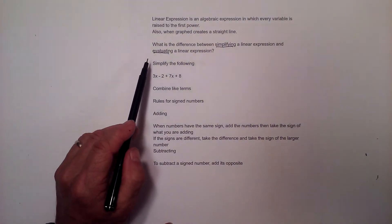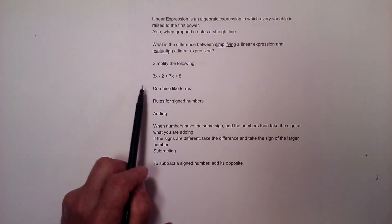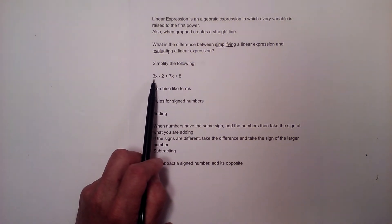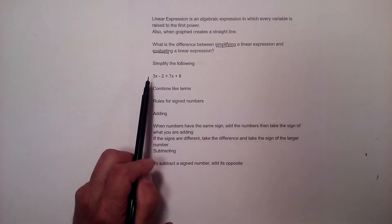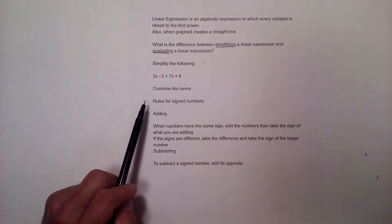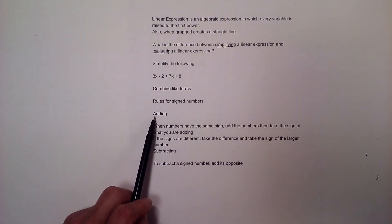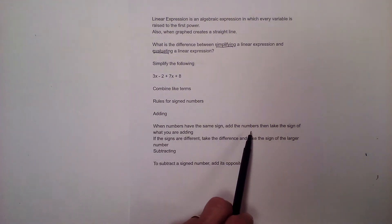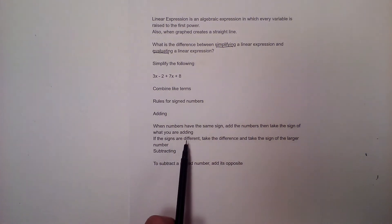You may be asked to simplify an expression, which basically means getting it down to its simplest terms. You combine like terms and follow the rules for signed numbers: when adding, if the signs are the same, add the numbers and take the sign of what you're adding.